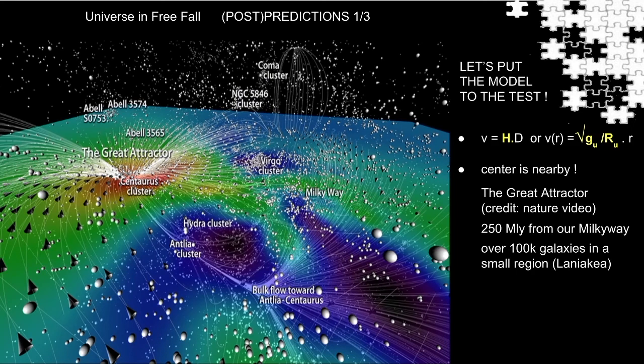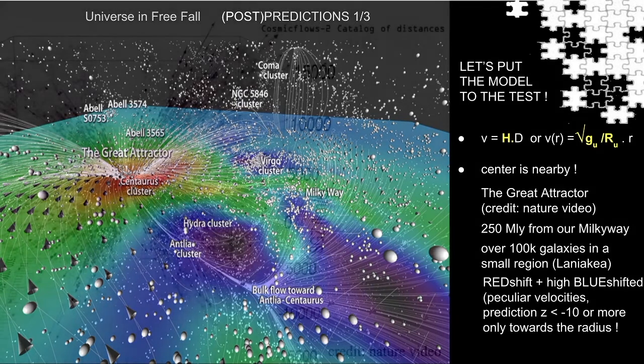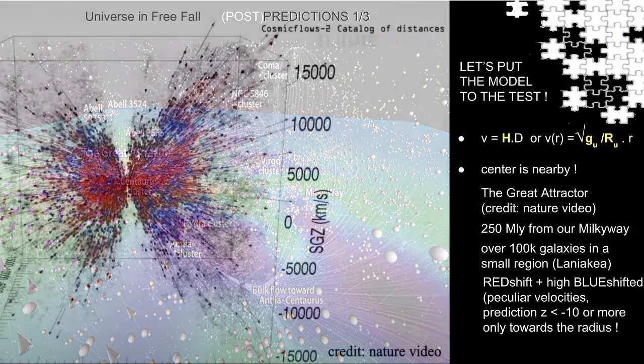And exactly as predicted in the model, before and behind the center, relatively close to each other, we should see red and blue shifted galaxies falling away and falling towards us.